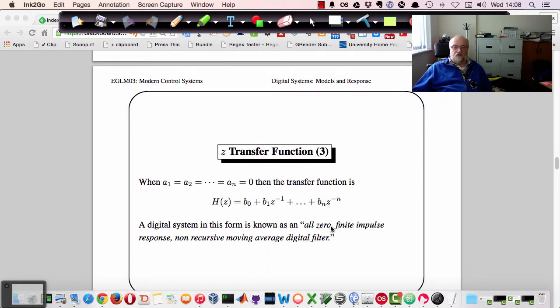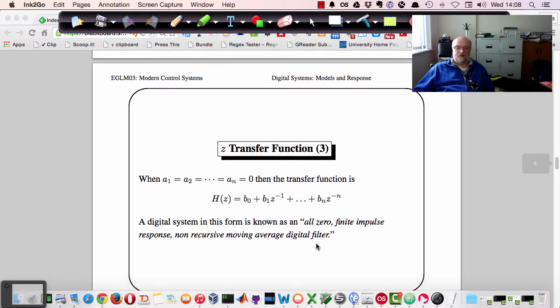So this is known as an all zero filter. And because there's no poles, we call it a finite impulse response system. It's non-recursive because it doesn't depend on the values of previous values of the output. And it's a moving average digital filter as before.